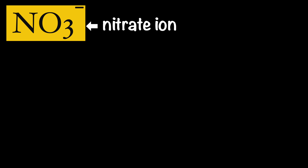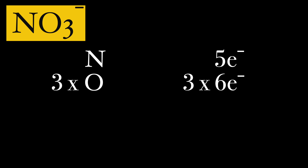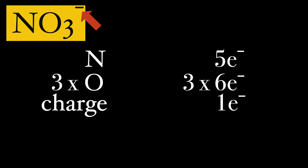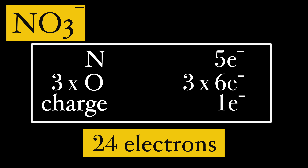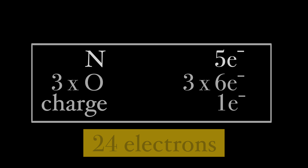Now, let's draw the Lewis diagram of the nitrate ion as an example. Nitrogen in group 15 has 5 valence electrons. Oxygen in group 16 has 6 valence electrons. Any charge in the molecule should be considered as well. Since there is a negative charge, we will add 1. The nitrate ion has 24 valence electrons.